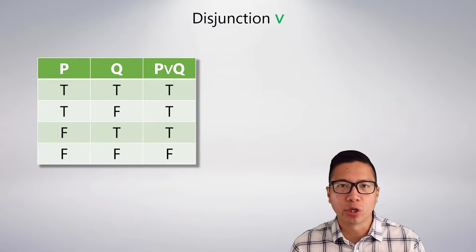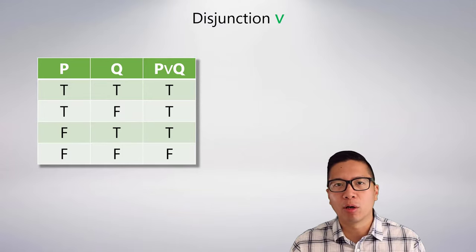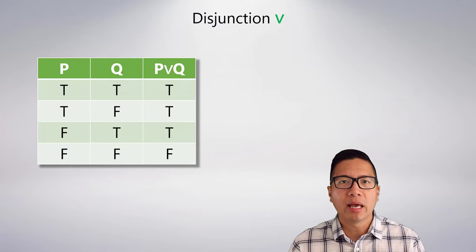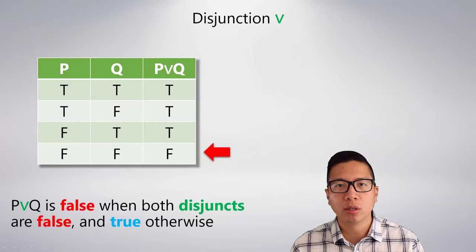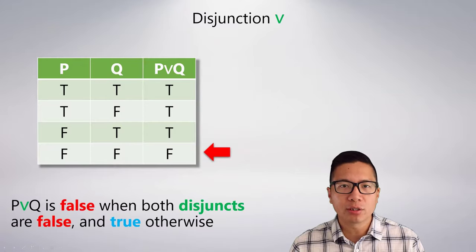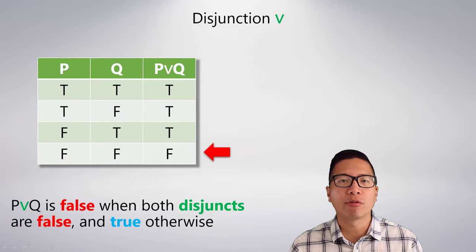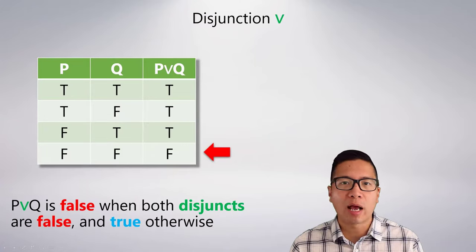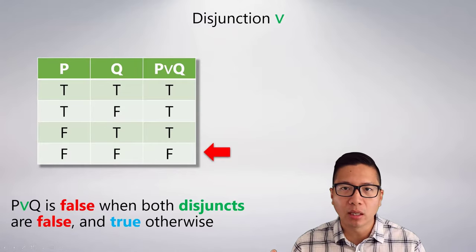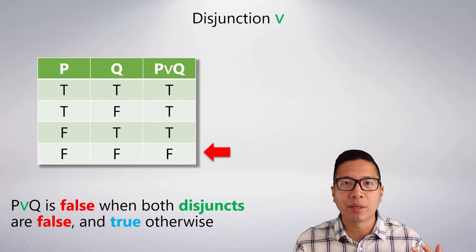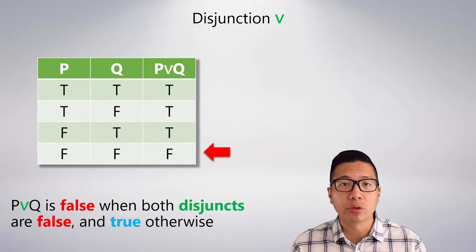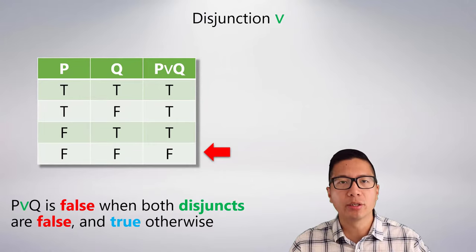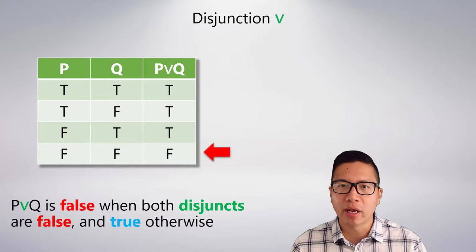The 'or' is called the disjunction, and 'or' in logic is inclusive. So for the disjunction it's false in only one case. If you want fries or salad, you're happy if you get fries, happy if you get salad, happy if you get both. The only way you're unhappy is if you get neither. That's reflected in the truth table: P or Q is false when both disjuncts are false and true in every other case.